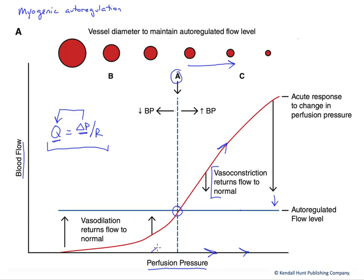If perfusion pressure were to fall, or we were in a tissue farther from the heart, it would intrinsically tend to get lower flow — and that's not necessarily what we need or want. So we would get vasodilation in response, causing our vessels to get larger in diameter, reducing resistance to flow and bringing it back up to normal.